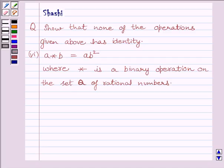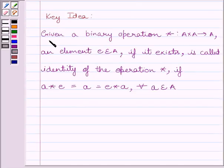First, let us understand the key idea to solve the given question. Given a binary operation star from A cross A to A, an element e belonging to A, if it exists, is called identity of the operation star if a star e equals a equals e star a for every a belonging to set A.